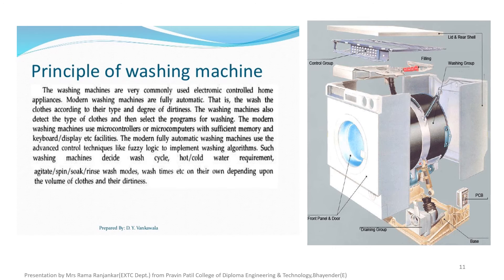Washing machine is the next application. These are very commonly used front-control room appliances. Modern washing machines are fully automatic and wash the clothes according to their type and degree of dirt. The washing machine also detects the types of clothes and then selects the programs for washing. The modern washing machine uses a microcontroller and advanced spectrum control techniques like fuzzy logic to implement the washing. The washing machine decides the wash cycle, temperature — hot or cold — water environments, and washing modes such as soft, delicate, and regular, depending on the volume of clothes and the level of dirt.